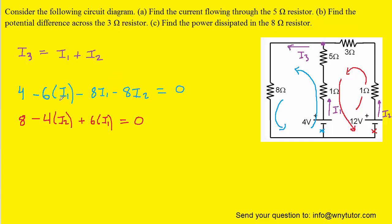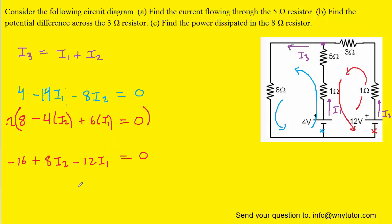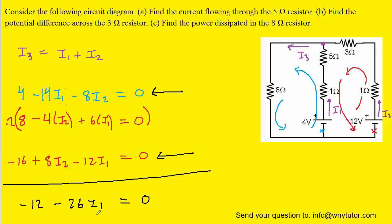One approach is to take the expression for I3 from the junction equation and plug it into the blue equation wherever we see I3. We distribute the negative 8 and combine the I1 terms — negative 6·I1 minus 8·I1. Looking at the blue and red equations, both have variables I1 and I2, so we use an elimination tactic. We multiply the red equation by negative 2 to align the I2 terms. Adding the two equations causes the I2 terms to cancel, and solving gives I1 approximately equal to negative 0.462 amps.